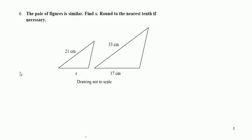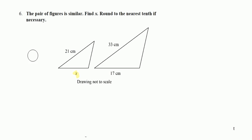Number 8 gives us similar triangles. With similar triangles, we have congruent angles and sides that are in proportion. It says to find the value of x. Let's set up a proportion — top left over top left: 21 over 33 equals x over 17. I can reduce: 21 and 33 both have a common factor of 3. So 3 goes into 33 eleven times and into 21 seven times.